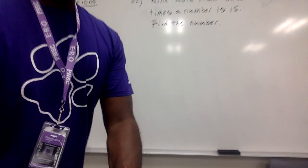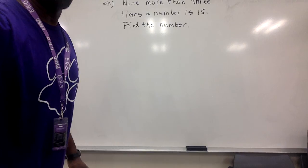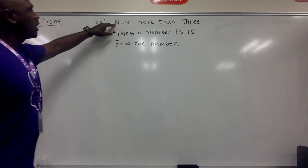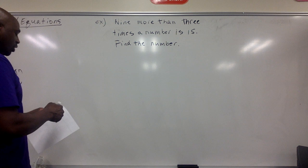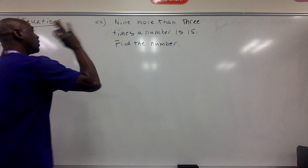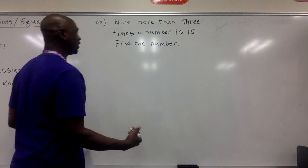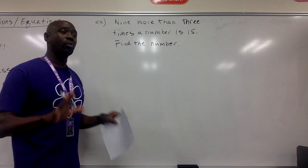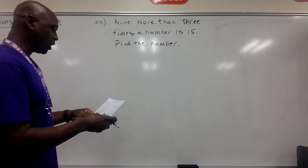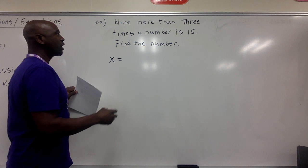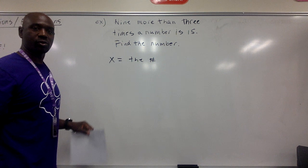Here's a quick example to get into the flow of translating equations: 'Nine more than three times a number is 15. Find the number.' According to the process, read it twice. You could start figuring it out with tick marks, but let's be more consistent. What is the unknown? The unknown is the number — that's what we're trying to find. Let's use the variable X.